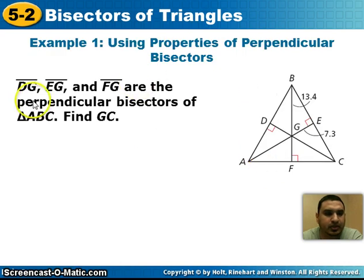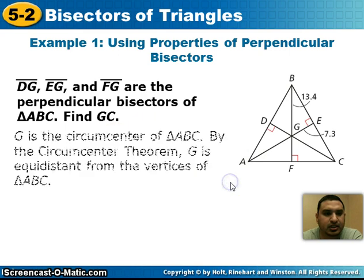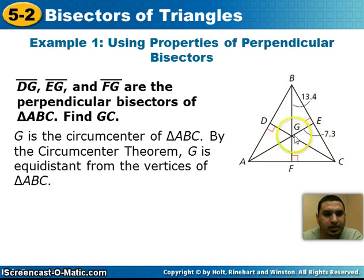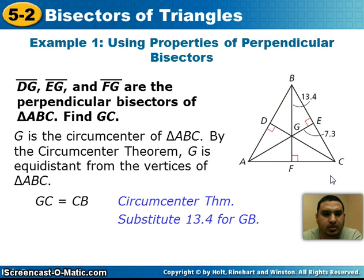Let's look at our first example. We're told that segments DG, EG, and FG are the perpendicular bisectors of triangle ABC, and we want to find the distance from G to C. Since we have all three perpendicular bisectors, G is the circumcenter of the triangle, which means G is equidistant from A, B, and C. By the circumcenter theorem, GC equals GB, and since GB is 13.4, GC is also 13.4.